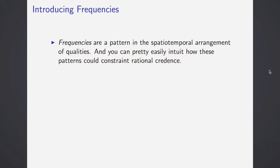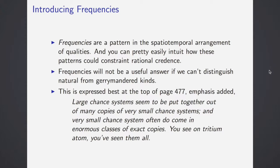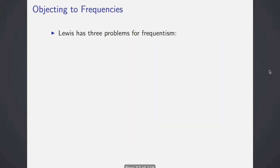He moves on to frequencies. Frequencies are a little bit easier to pin down. Frequencies are a pattern in the spatiotemporal arrangement of qualities. You can pretty easily intuit how these patterns could constrain rational credence. Frequencies, however, will not be a useful answer if we can't distinguish natural from gerrymandered kinds. He says of this that large chance systems seem to be put together out of many copies of very small chance systems. And very small chance systems often do come in enormous classes of exact copies. If this is the important part, you see one tritium atom, you've seen them all.